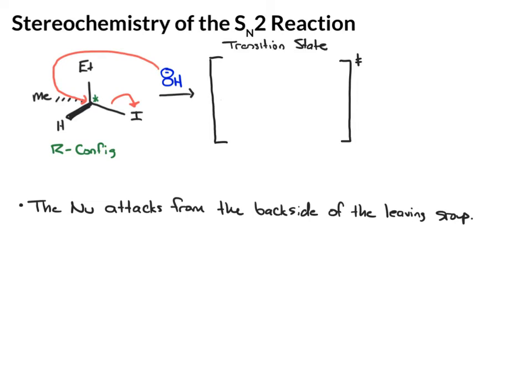Transition states are where bonds are being made and broken. In this case, I have my carbon with the ethyl, methyl, and hydrogen still intact.